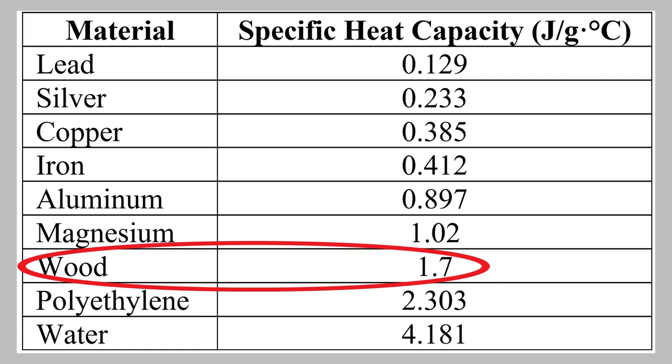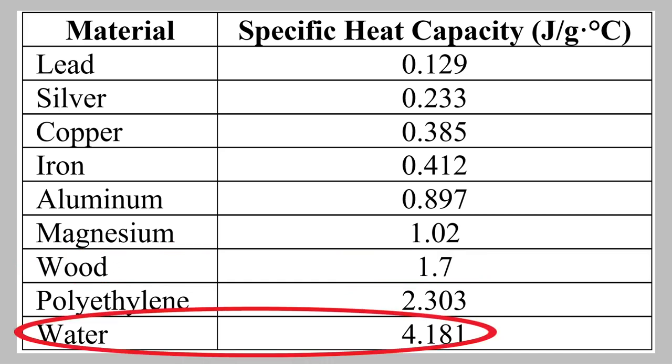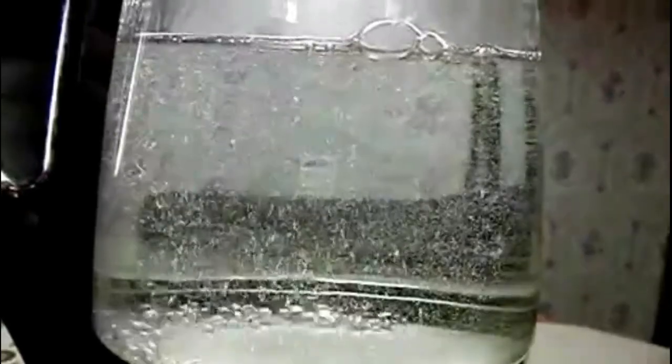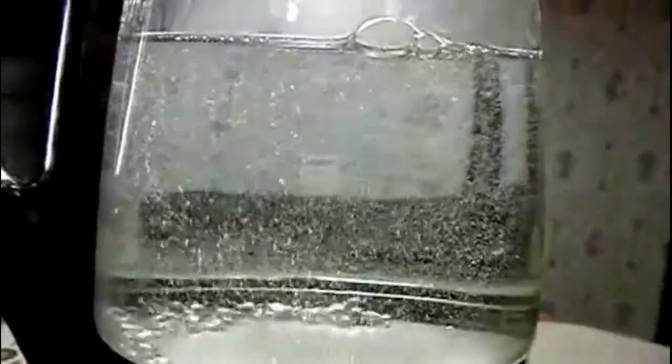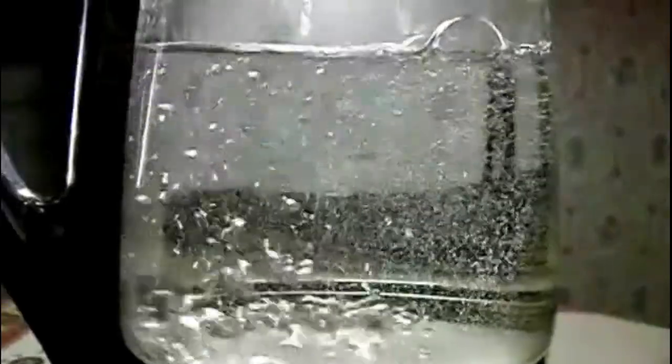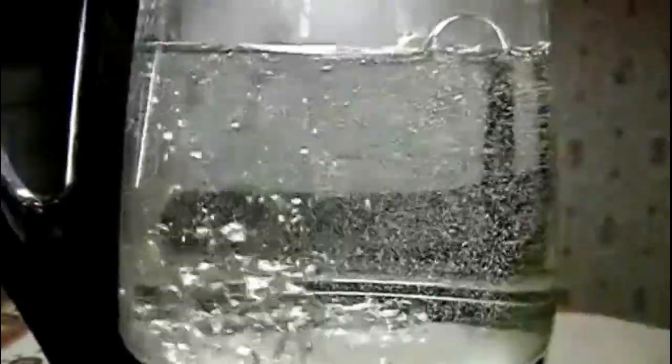This also explains why it usually takes a long time to boil water. As you can see, water has an unusually high specific heat capacity. There really aren't very many common liquids that have a specific heat capacity as high as that of water. That makes water especially difficult to heat.